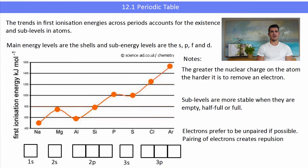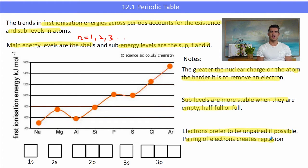So if we have a look at the trend in first ionization energies of the elements across period three, we see the existence of the main energy and sub-energy levels. Now the main energy levels are the shells 1, 2, 3 and 4, and the sub-energy levels are the S, P, F and D sub-shells that we've talked about. A couple of notes for when we do these drawings: remember that the greater the nuclear charge the harder it is to remove an electron, and the sub-levels are stable when they are either half empty or full, and electrons prefer to be unpaired if possible. Pairing of electrons creates some repulsion.